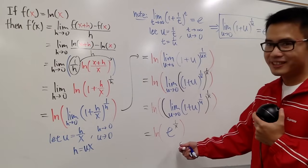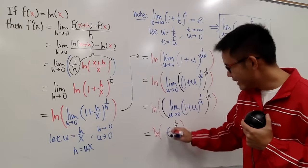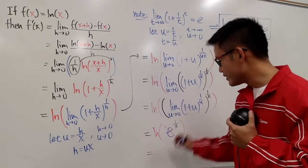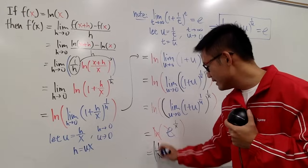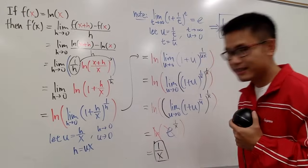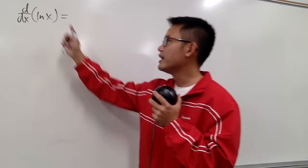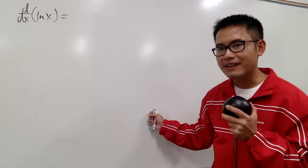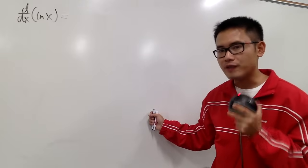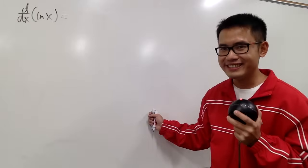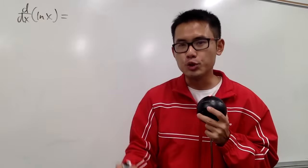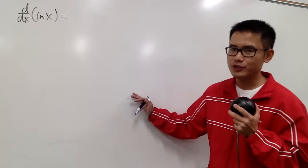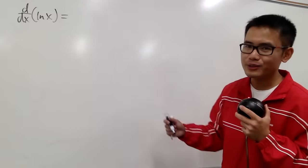That inner limit is precisely the number e. So the whole expression becomes ln(e^(1/x)). Since ln and e cancel each other, the answer is just 1/x. For the second way, we need the derivative of exponential functions first — check the video in the description — and we'll also use implicit differentiation.